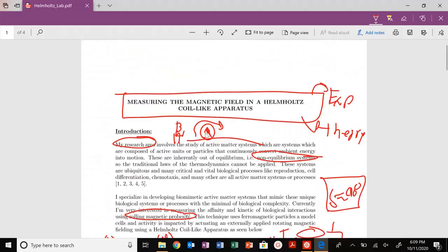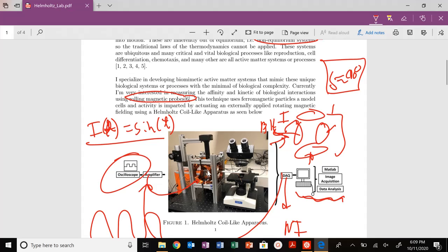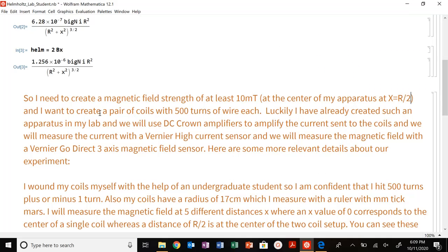That's the center of my apparatus, as we kind of talked about last time. So this is the center of the coil, but the center of my apparatus is right here. So I want to create a pair of coils. The number of turns is 500 turns of wire.